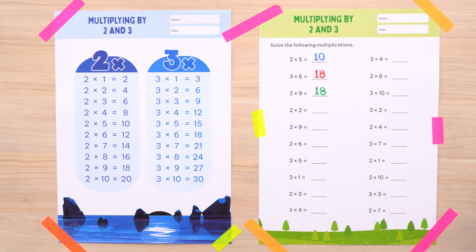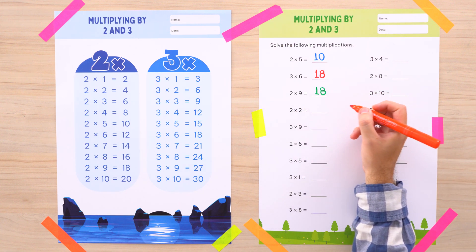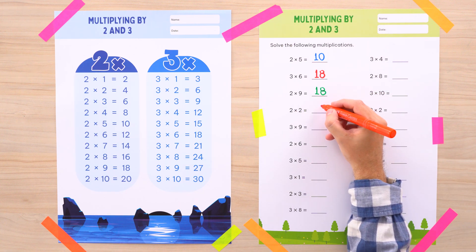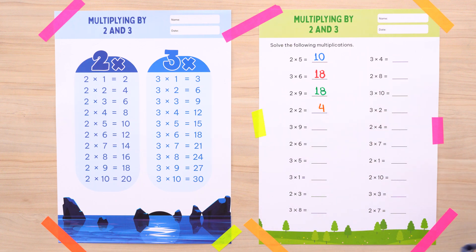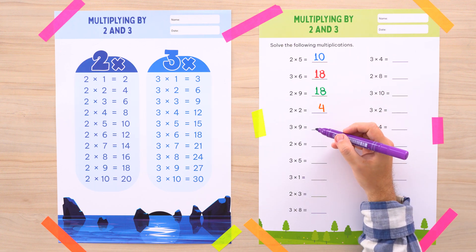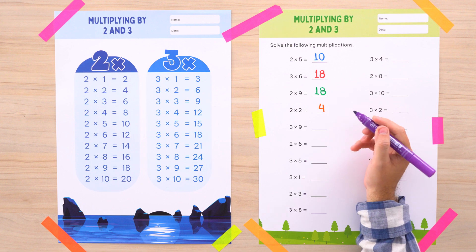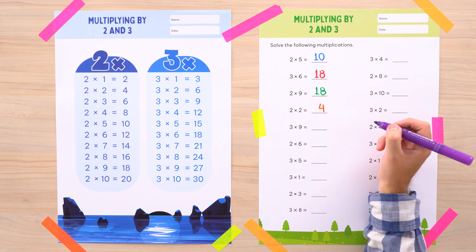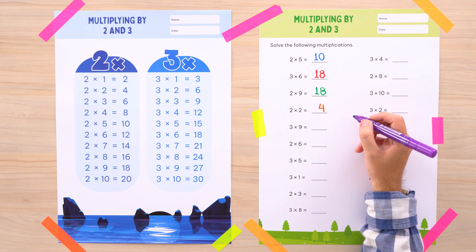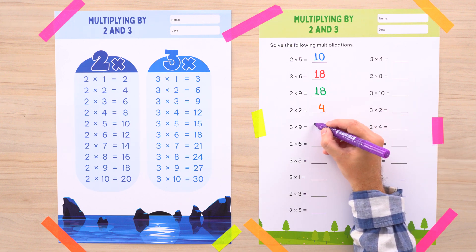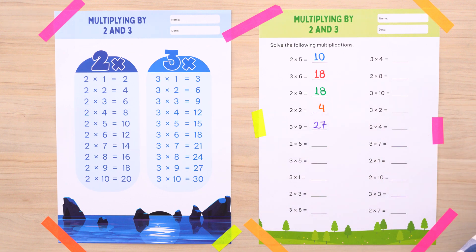Let's continue with the next problem. Here we have 2 times 2 — piece of cake. 2 times 2 is 4. Perfect. One more: it's time to solve 3 times 9. 3 times 9 is equal to... 27. That is correct — 27 is the correct answer.